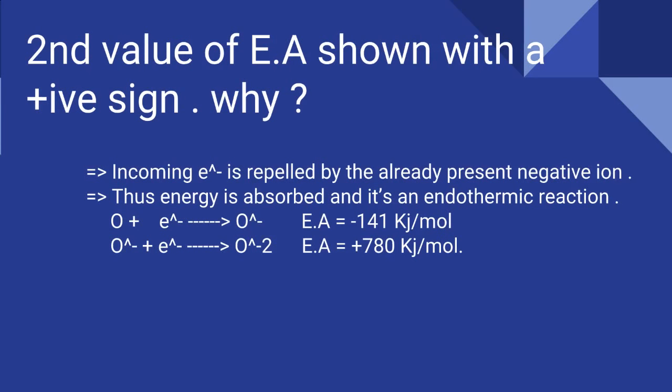The question arises: why is the second value of electron affinity of an element shown with a positive sign? Usually, electronegative elements release energy when the first electron is added. But when a second electron is added to a uninegative ion, the incoming electron is repelled by the already present negative ion. In order to overcome the repulsion, energy is absorbed during the process. Thus the formation of a di-negative ion is an endothermic process — endothermic means absorption of energy — so the electron affinity has a positive sign.